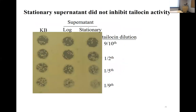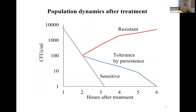To confirm that tolerance is a real phenomenon, we tested whether stationary supernatant was inhibiting tailocin particles. We prepared filter-sterilized stationary and log supernatants, diluted tailocin particles in those supernatants, and tested their activity. The results showed no inhibition of tailocin particles from the supernatant, meaning cells were not producing anything that would inhibit the tailocins. Going back to the graph, cells are surviving and they are tolerant — could these be persistent cells? To find out, we performed a prolonged tailocin exposure.